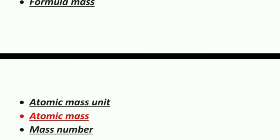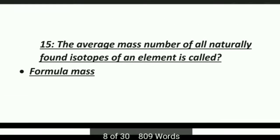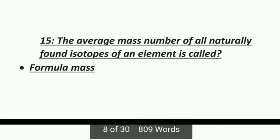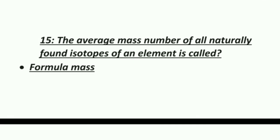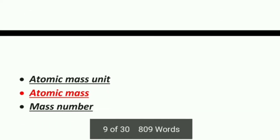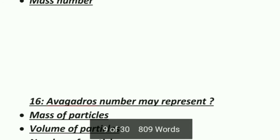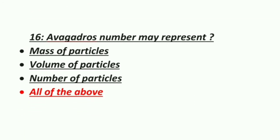Fifteenth MCQ: the average mass number of all naturally found isotopes of an element is called — Option 1: Formula mass, Option 2: Atomic mass unit, Option 3: Atomic mass, Option 4: Mass number. The correct answer is atomic mass.